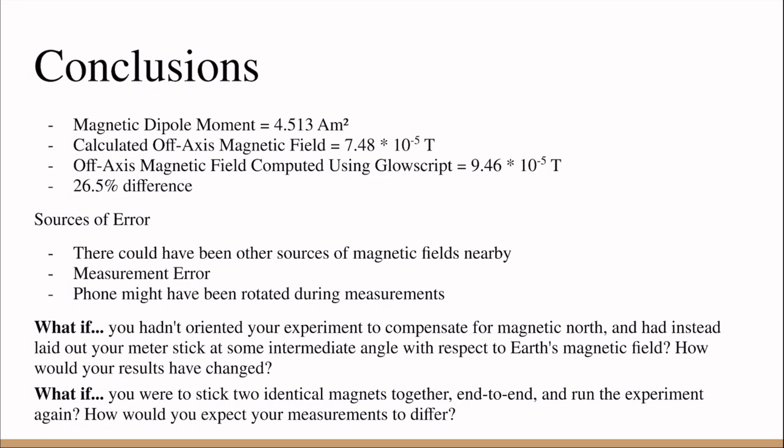Some sources of error: there could have been other sources of magnetic fields nearby, such as my computer or something else. There could have been measurement errors that I made, and my phone could have been rotated during measurements, which I wasn't supposed to do.